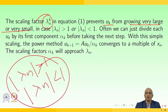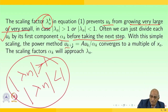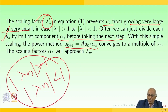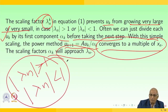Often we can simply divide each uₖ by its first component αₖ before taking the next step. With this simple scaling, the power method update is uₖ₊₁ = A·uₖ / αₖ. With this simple power method, uₖ converges to a multiple of xₙ, and the scaling factor αₖ will approach λₙ. This is the logic behind the algorithm.